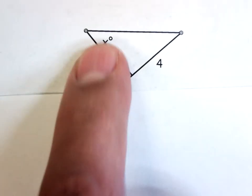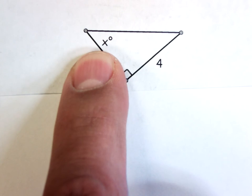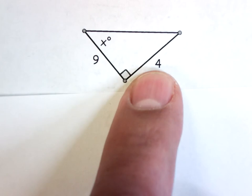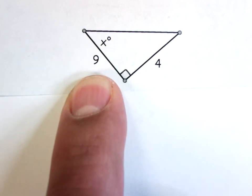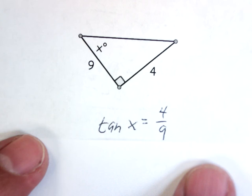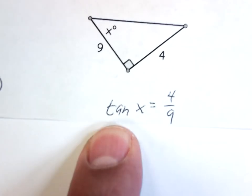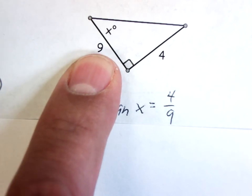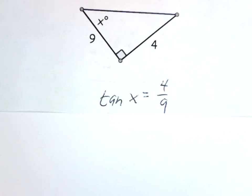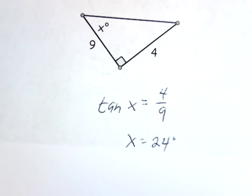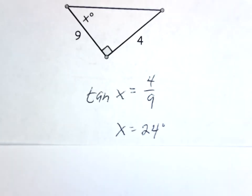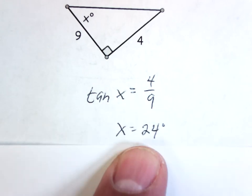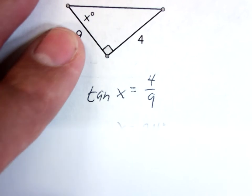Similar question. In relation to this angle, this is the opposite side and this is the adjacent side. So: tan(x) = 4/9. When I already know what the tan is, I go to my calculator, do second tan of 4 divided by 9, and I get x = 24 degrees.